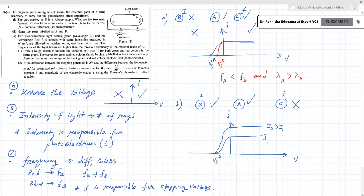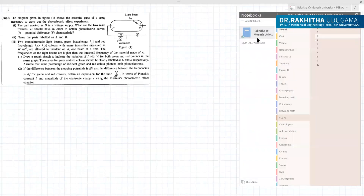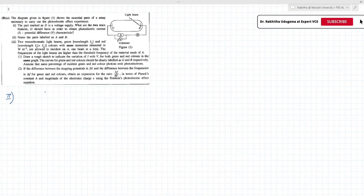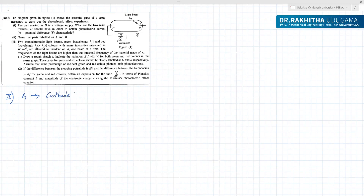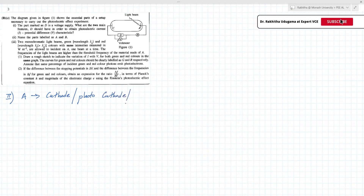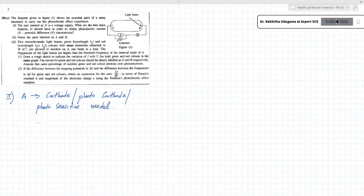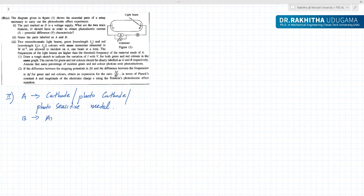So now moving into the second part. Question number two: name the parts labeled A and B. A — you can say this is your cathode, or photocathode, or photosensitive metal; all are acceptable. B would be your emitter.